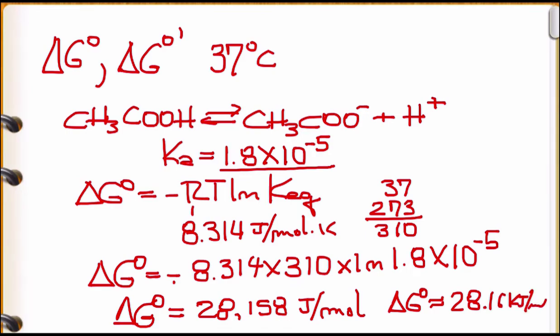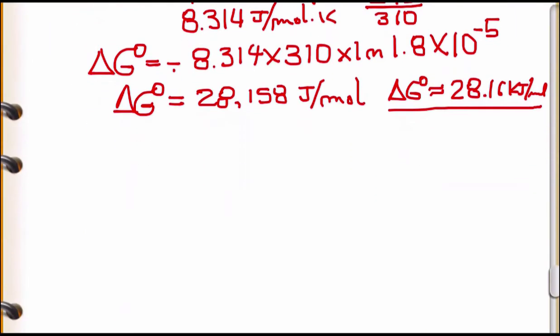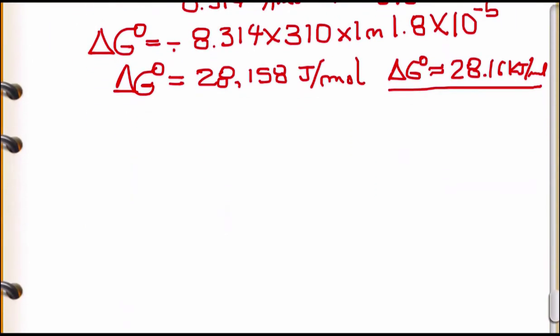Since ΔG° is positive, this tells us that at 37°C under standard conditions, this reaction is not spontaneous. Now let's scroll up and calculate for the biochemical standard condition using the other equation.